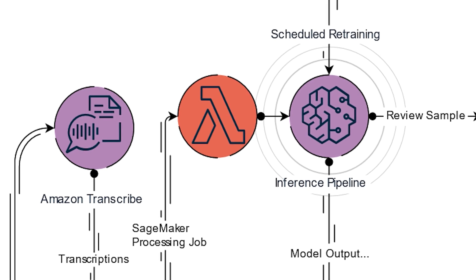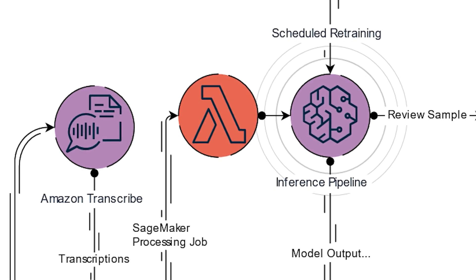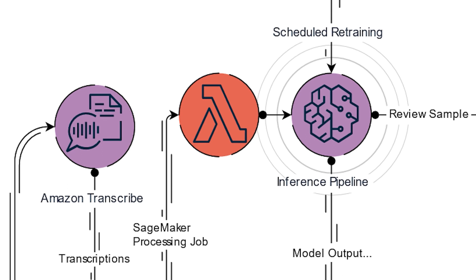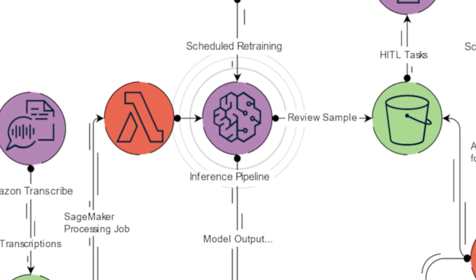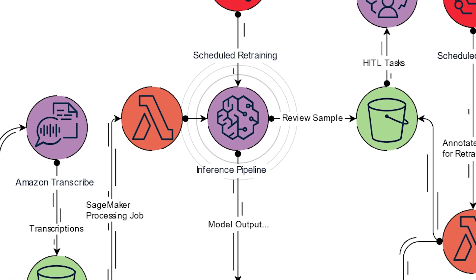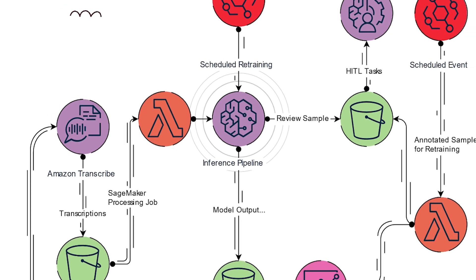The inference pipeline is a very significant component in this architecture, because this architecture can be retrofitted to any business use case. When you want to retrofit it to a different use case, the inference component is the only one you need to change. Text goes into the inference pipeline, a model output is generated inside the component, we apply a business rule, and that gives us the form of the data from which we can derive value.